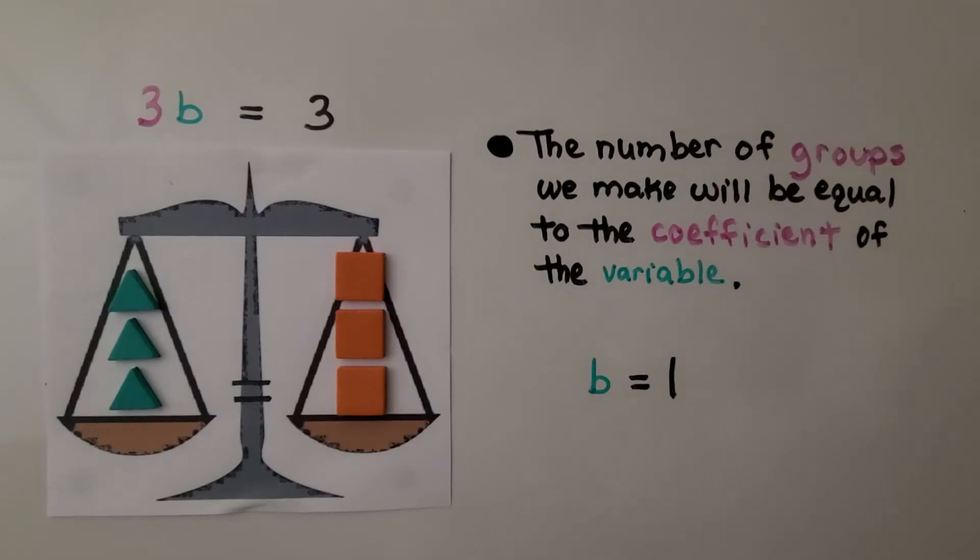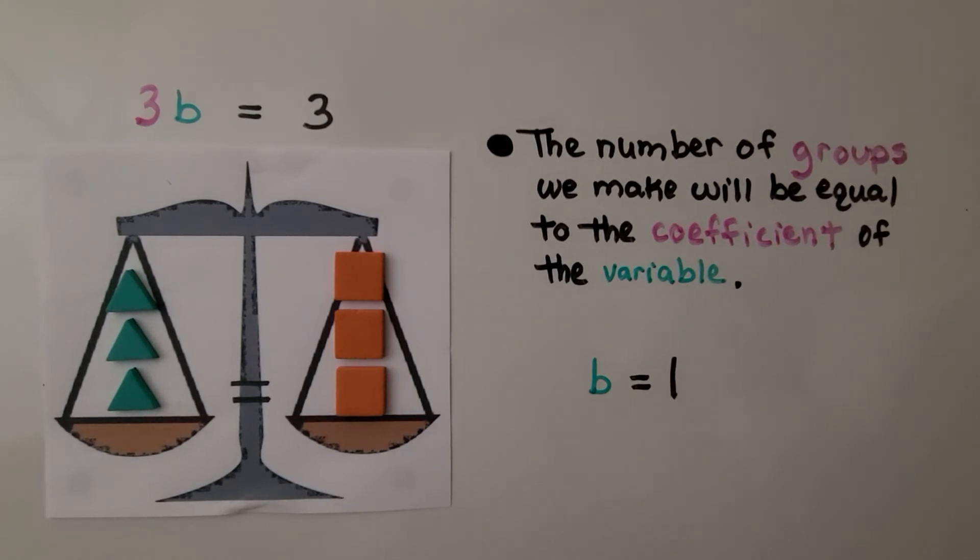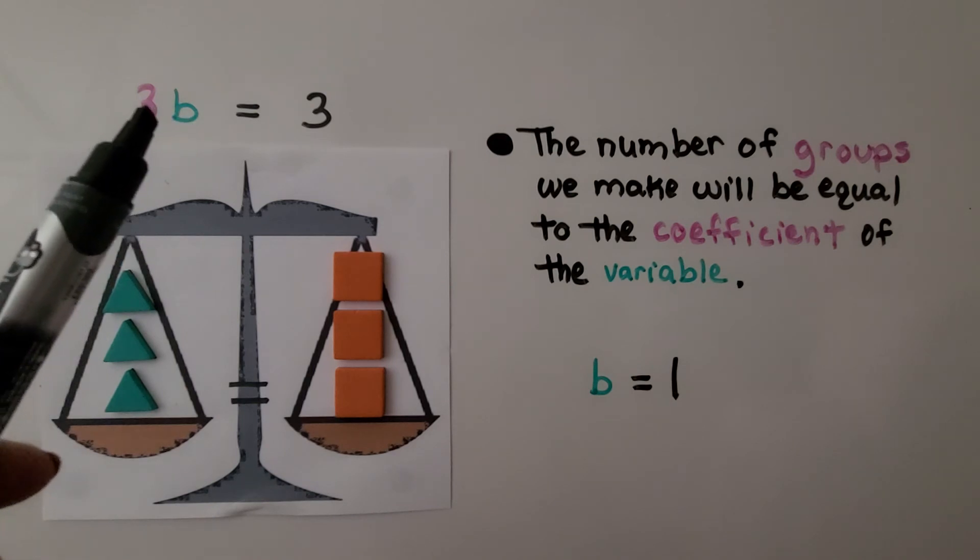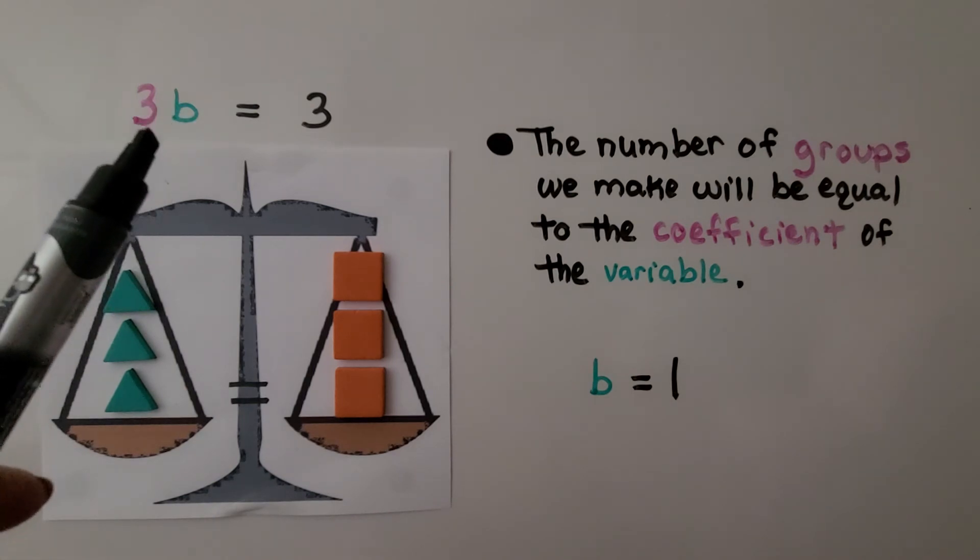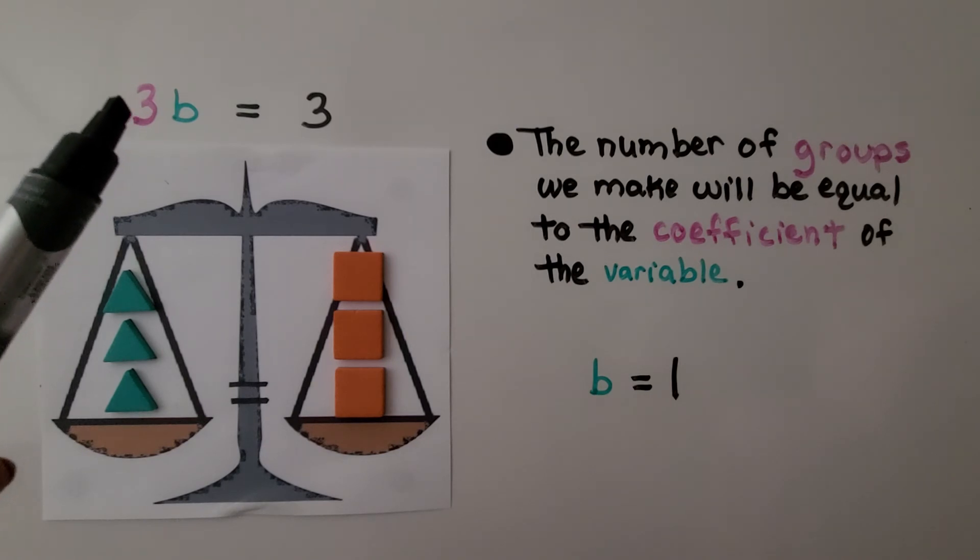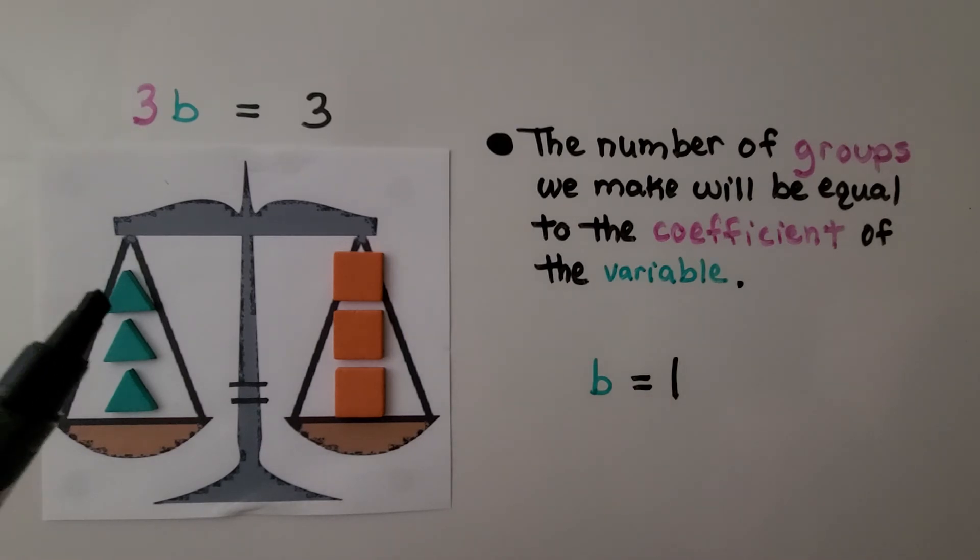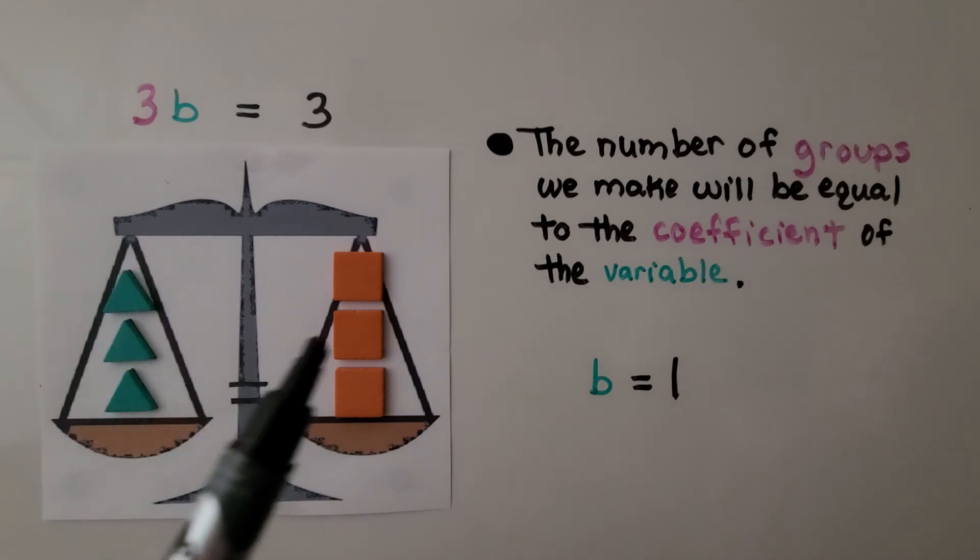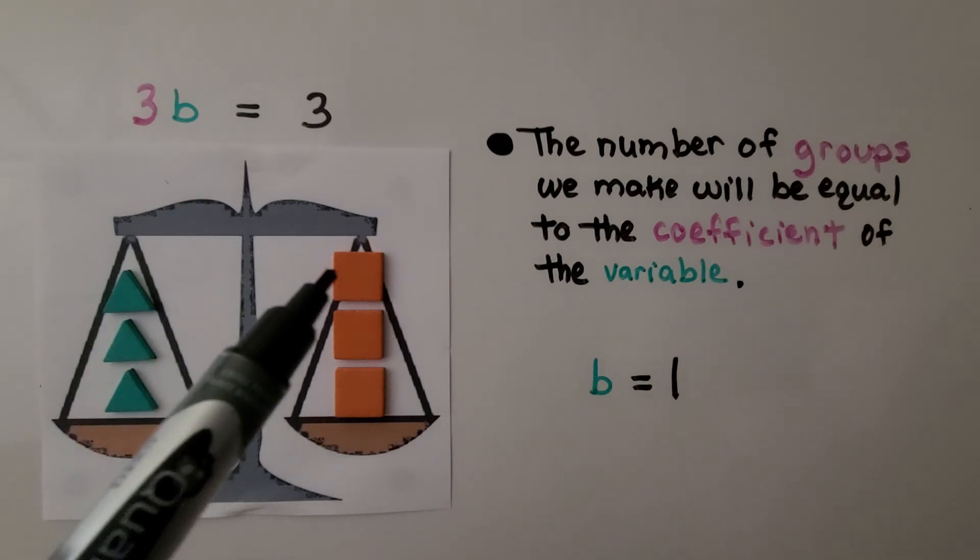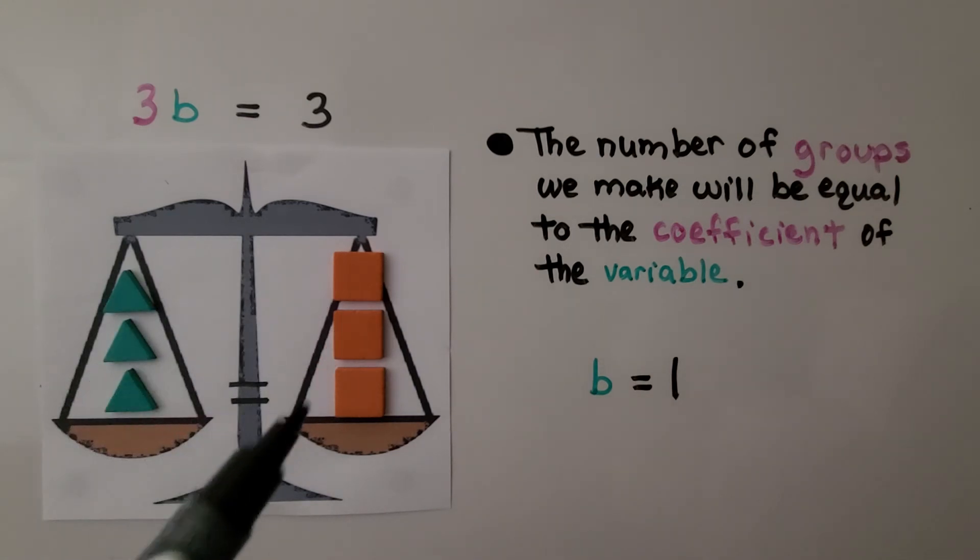The number of groups we make will be equal to the coefficient of the variable. Remember, the number that is just to the left of the variable with nothing between them, that's the coefficient to the variable. That tells us how many groups we're going to have. We have a three here, so we're going to have three groups. This is showing us that b is equal to one. We have one triangle to one square, one triangle to one square. That means b is equal to one.